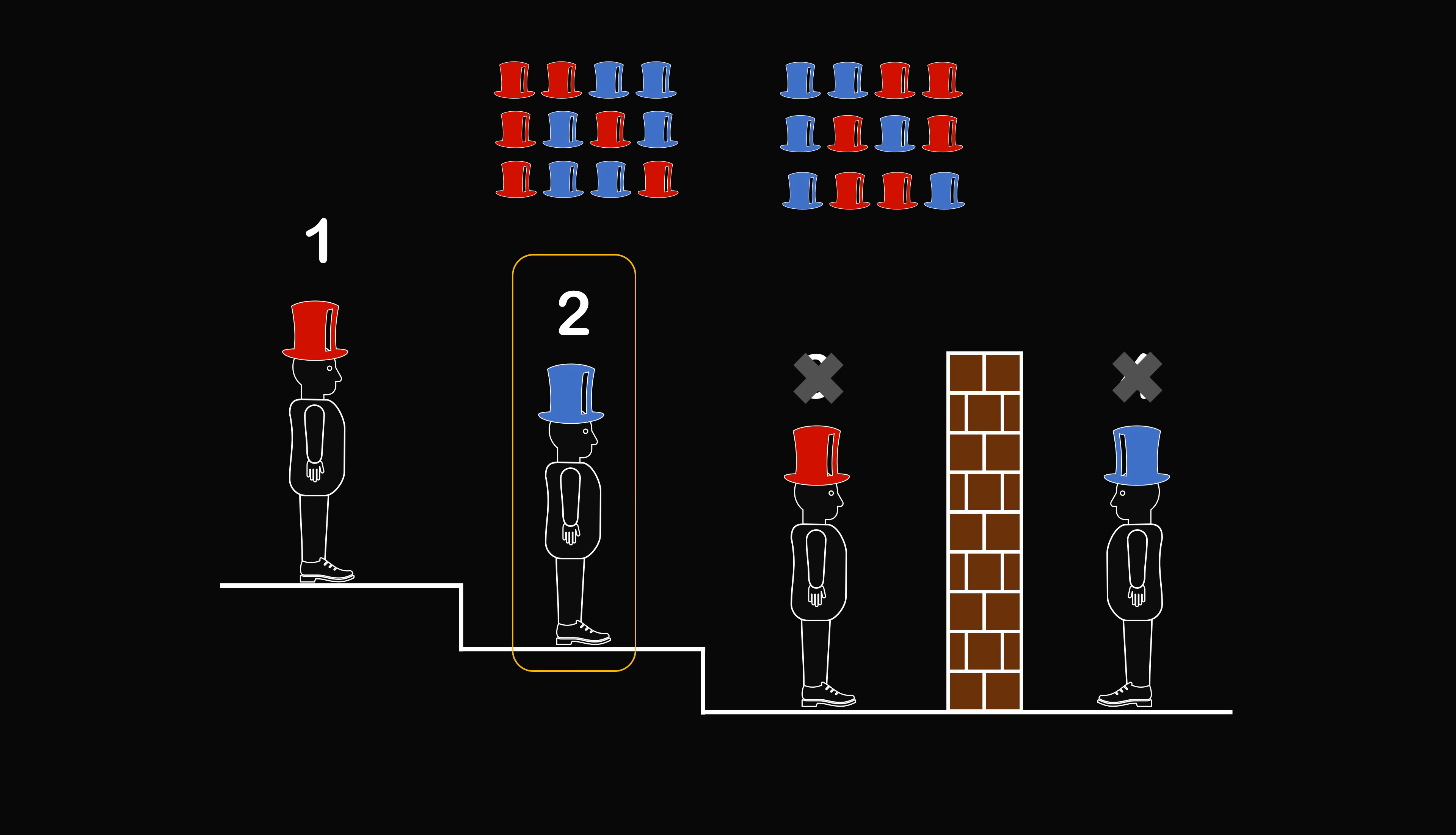Now logician two sees a red hat on the third person. So logician two looks at which possibilities have a blue hat on the third option and says these cannot be the possible arrangements. So we are down to three possibilities.